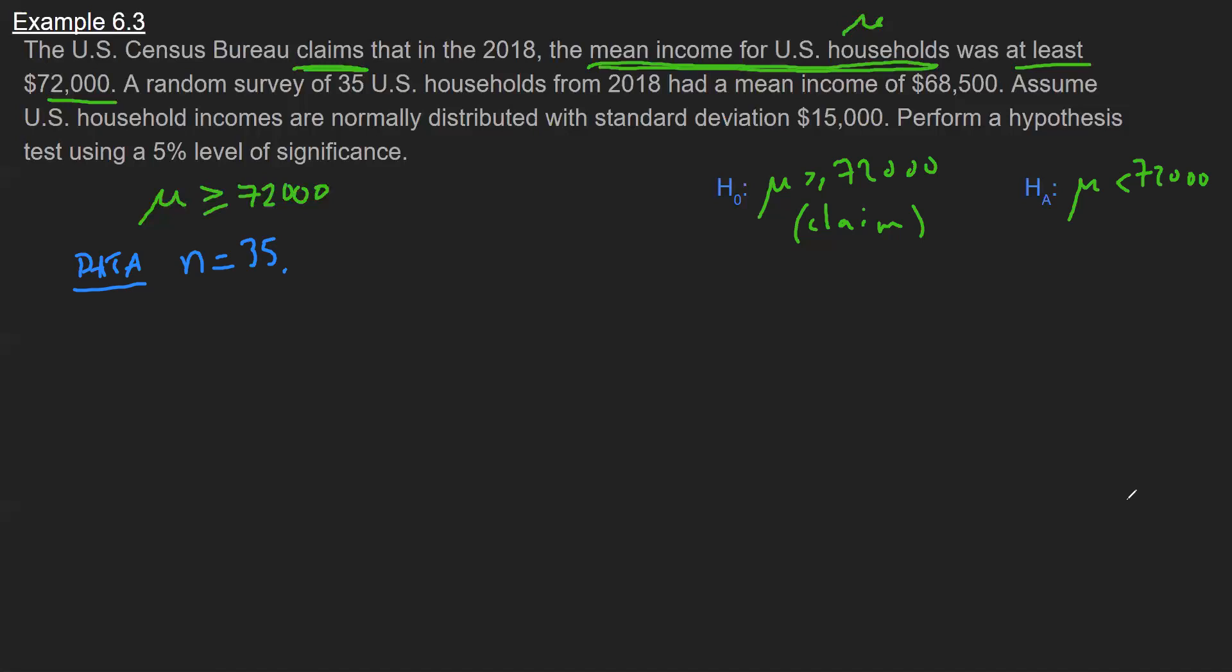Now the problem uses the word mean again, and now I have to differentiate: is this the mean for the entire population or is this just the mean of the sample? And since it says it came from the survey of 35, I know that's the mean of the sample. So that symbol is X bar.